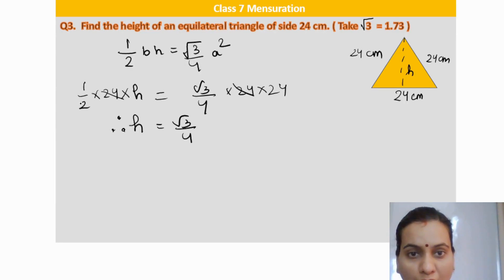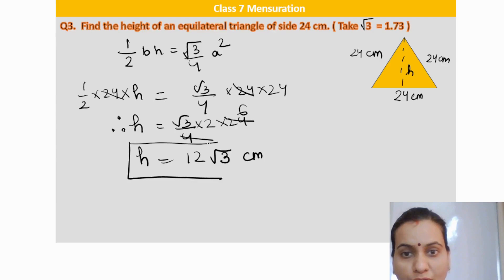Height will be equal to root 3 by 4. Half goes to the other side, multiplied by 24. So 4 times 6 is 24, 6 times 2 is 12, and root 3 remains. Height is 12 root 3. Root 3 value is given as 1.73, so we have to multiply with 12.